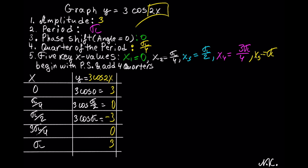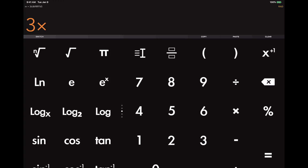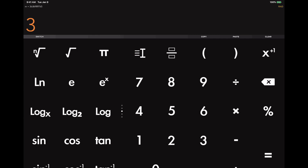When x is 3π/4: substituting into 3 cosine of 2x gives 3 cosine of 2×(3π/4). The 2 goes into 4 twice, giving 3 cosine of 3π/2. Note that 3π/2 is a quadrantal angle, so the result is 0. When x is π: we get 3 cosine of 2π, which is coterminal with cosine of 0. We can verify with a calculator: 3 times cosine of 2π equals 3.